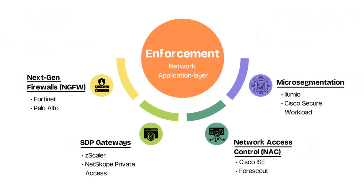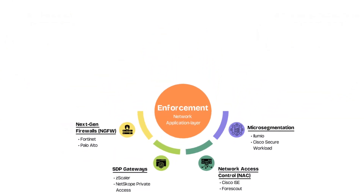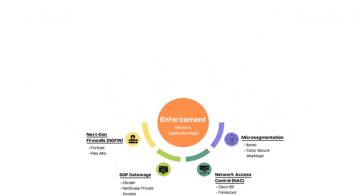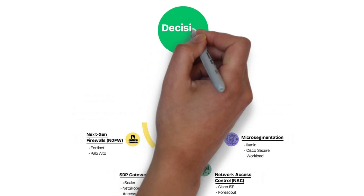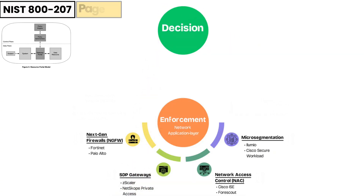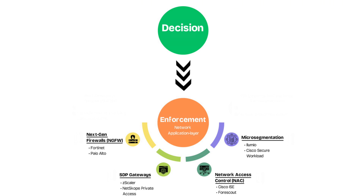Ultimately, the most important factor in selecting the right enforcement point isn't just the technical capabilities — it's ensuring that it fully integrates with your policy decision point. The decision to purchase or deploy a PEP should go hand-in-hand with your choice of policy decision point. The two must be compatible, work seamlessly together, and align with your organization's policy enforcement needs.